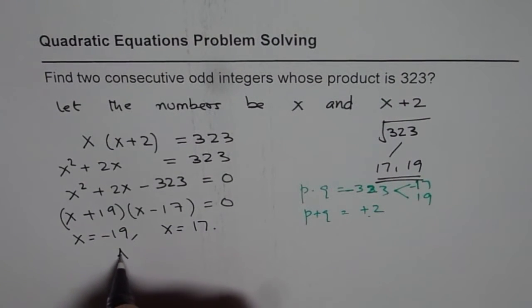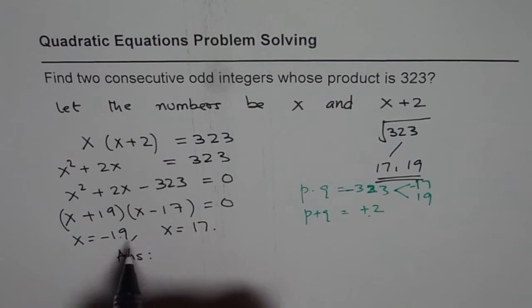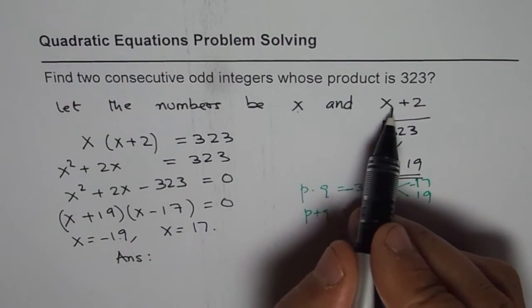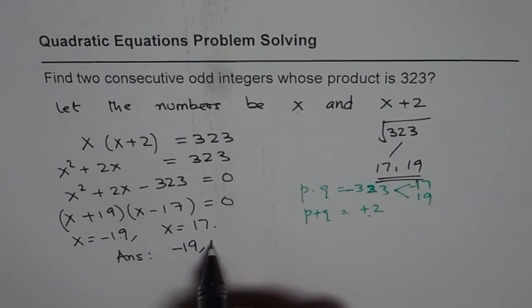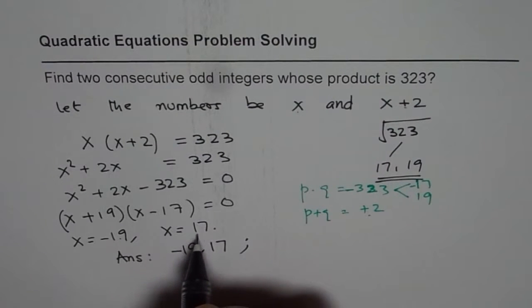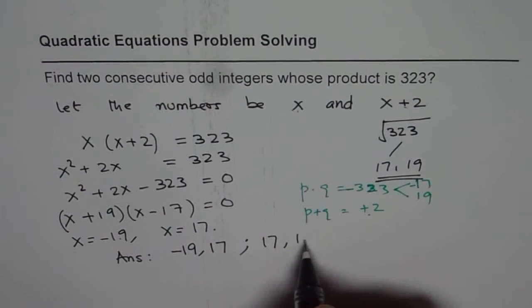Now the solution will be, if x is minus 19, so we get one set, that is one number is minus 19, the other one is minus 19 plus 2. So one set will be minus 19 and minus 19 plus 2 will give us minus 17. The other one is, if I consider 17 as my number, then 17 plus 2 will be 19.